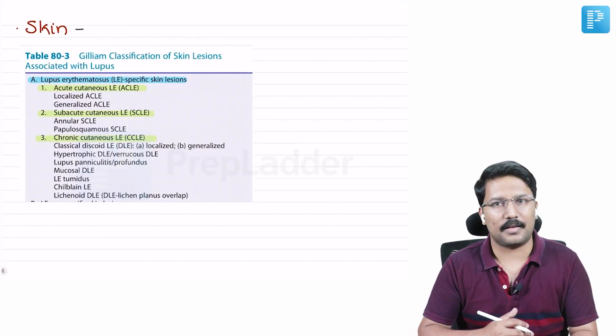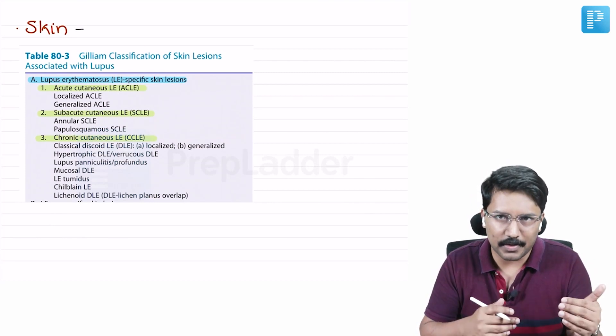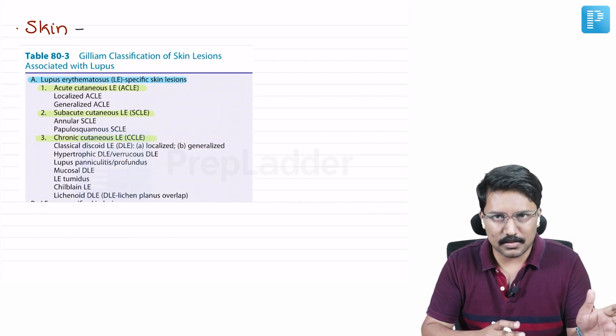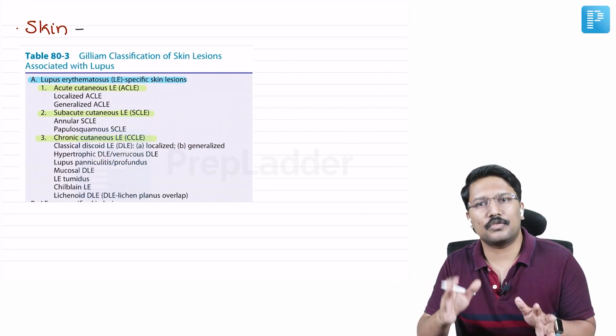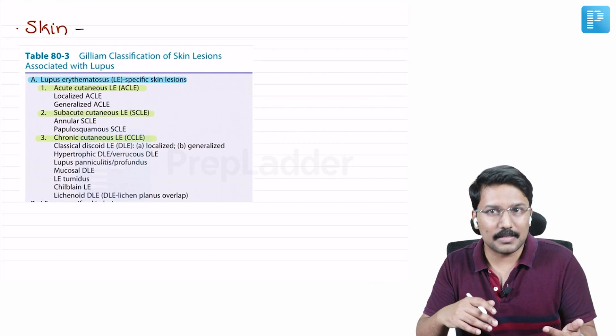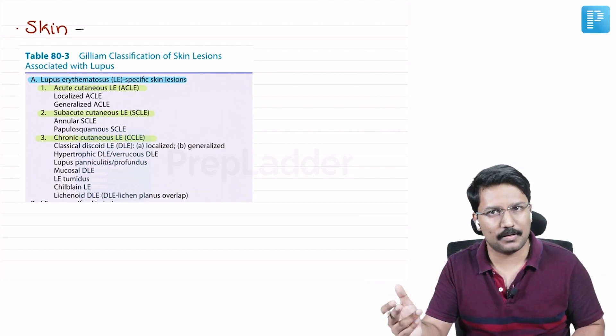Now coming to the real area - that is skin. When it comes to skin manifestations, we are all already familiar that there are acute lesions, subacute lesions and chronic lesions. But equally important for us to know is that we can classify the skin lesions into lupus specific and lupus nonspecific.